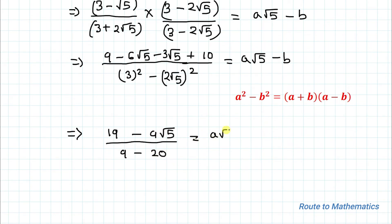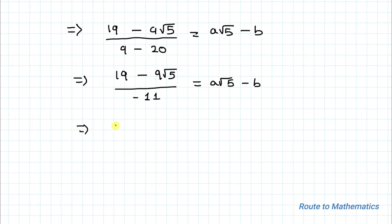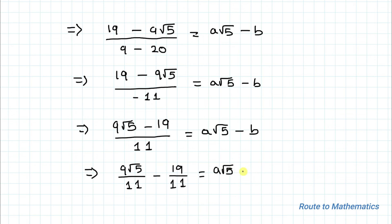The right hand side remains a root 5 minus b. In the next step, the numerator simplifies: 9 plus 10 is 19, and minus 6 root 5 minus 3 root 5 is minus 9 root 5, giving (19 minus 9 root 5) divided by (9 minus 20) equals (19 minus 9 root 5) divided by minus 11. Taking the negative sign across, minus 9 root 5 becomes positive 9 root 5 and 19 becomes minus 19, giving (9 root 5 minus 19) divided by 11 equals a root 5 minus b.